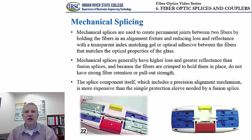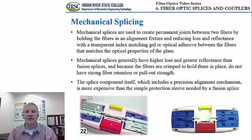Mechanical splices are used to create permanent joints between two fibers. The two fibers are held in an alignment fixture and brought into close contact. The connection between the two glass cores is established through the use of a transparent index matching gel or optical adhesive that matches the optical properties of the glass, resulting in reduced loss and reflectance as light propagates across the junction between the two glass cores.